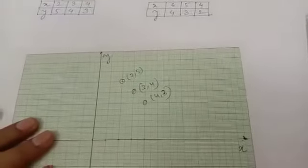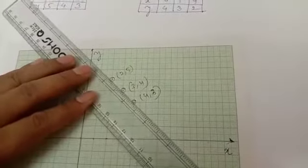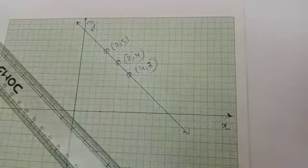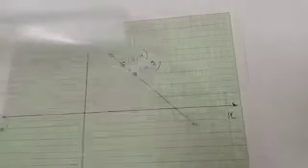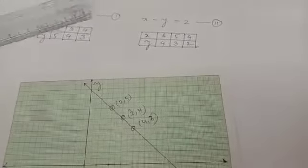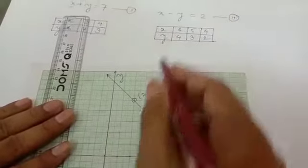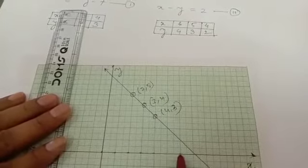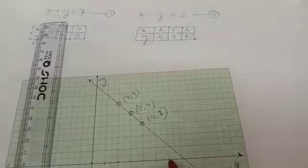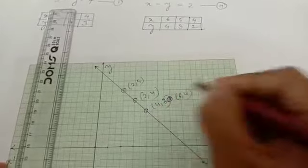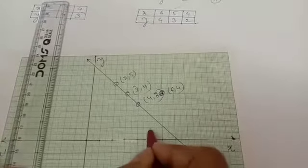Now if you join all these 3 points, you will see that this forms a straight line. Now do the same for the second equation on the same graph paper. Plot the first point at (6, 4): move 6 on the x-axis and 4 on the y-axis. Then plot (5, 3): move 5 on the x-axis and 3 on the y-axis.